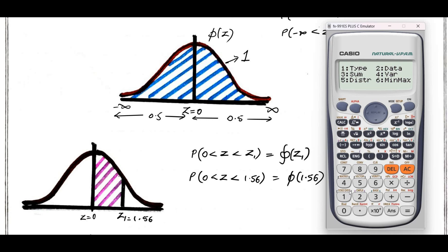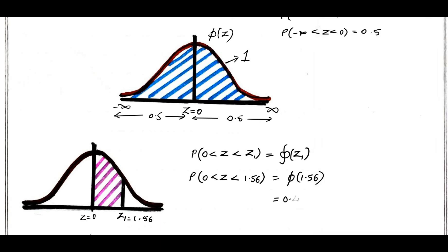Since we have stat and distribution, make use of this key. In that menu we have values 1 to 6. The fifth one will be distribution, so press 5. We have many varieties of distribution; for this type, we can fetch the answer using the second one called Q. If I give Q of 1.56, I got the answer as 0.44062. This is the answer for phi of 1.56, which you can also verify using a table.